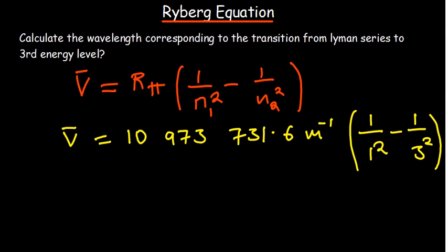Wave number is 1 over wavelength. Grabbing your calculator, 1 over 1 squared is just 1 minus 1 over 9, which is obviously going to be 8 over 9, multiplied by 10,973,731.6.